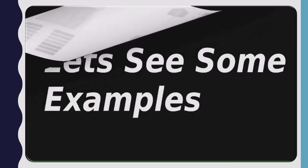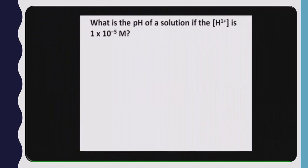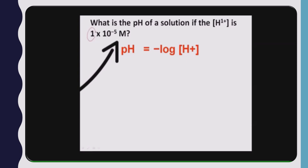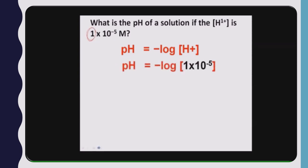Now let us see some examples. First question: what is the pH of a solution if the H⁺ ion concentration is 1 × 10⁻⁵ molar? At the first step, we write the formula: pH = −log[H⁺]. The H⁺ ion concentration is measured in molar. We write the value of the H⁺ ion concentration, which is 1 × 10⁻⁵. This is asking how much power of 10 equals 10⁻⁵, which is obviously −5.